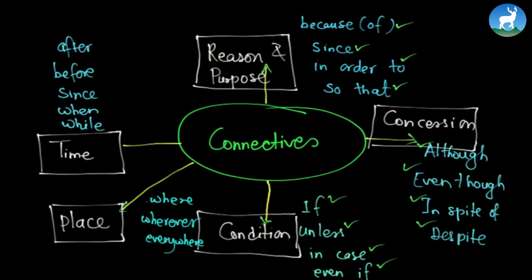Finally we have place connectives, where we use words like 'where', 'wherever', and 'everywhere'. For example: everywhere we travel, the same guy was with us. Or: wherever he led, we followed. So these are what we call place connectives. And finally we have time connectives, in which we use words like 'after', 'before', 'since', 'when', and 'while'. For example: I will call you after I come to Kathmandu. Or: meet me before you leave. Or: return the book when you meet me next time.